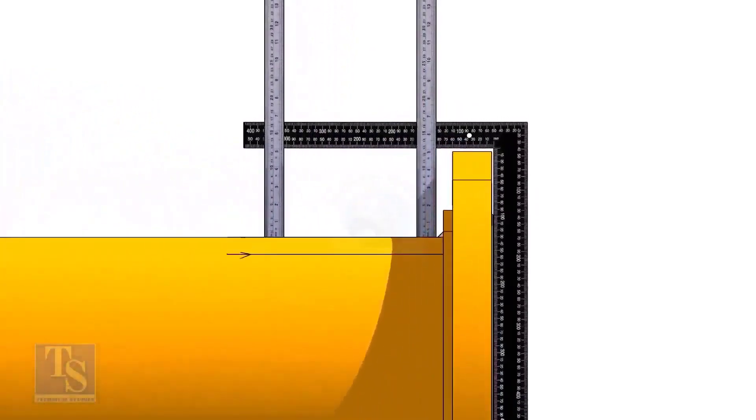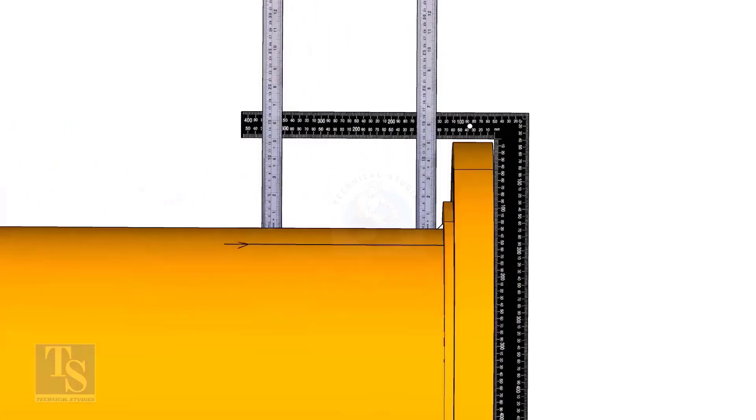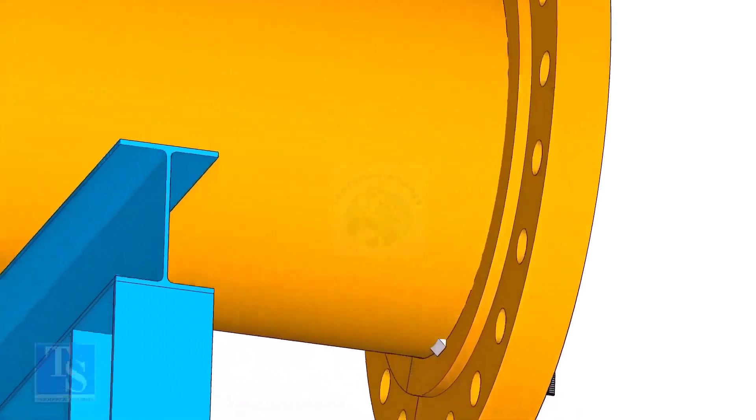Tack weld on the top of the pipe with the flange and check the squareness. If correct, tack weld at the bottom side also.